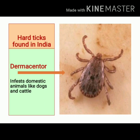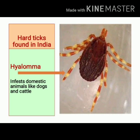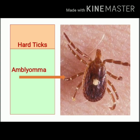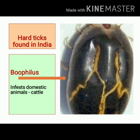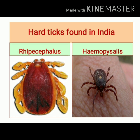Let's see different types of hard ticks that we can find in India. In this image, you can see Dermacentor. This hard tick commonly infests domestic animals like dogs and cattle. In this slide, you can see another hard tick, Hyalomma. It also commonly infests dogs and cattle. This is Amblyomma hard tick. This is Boophilus hard tick, which we can commonly find on cattle.